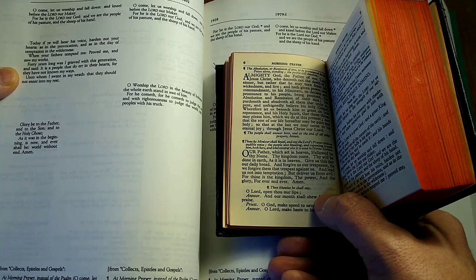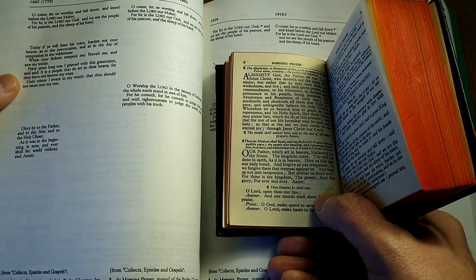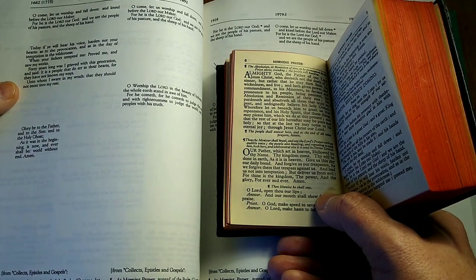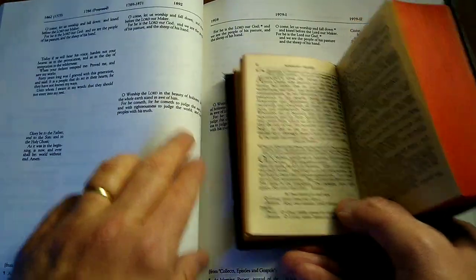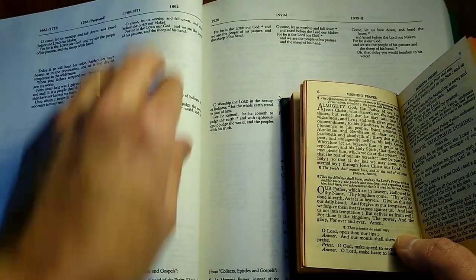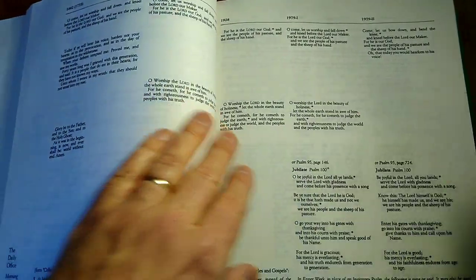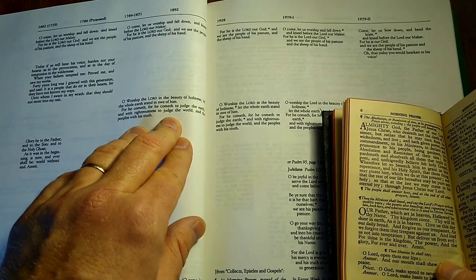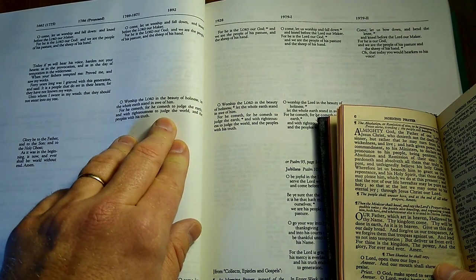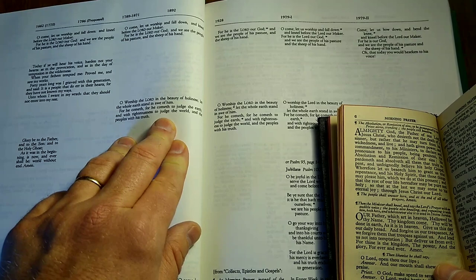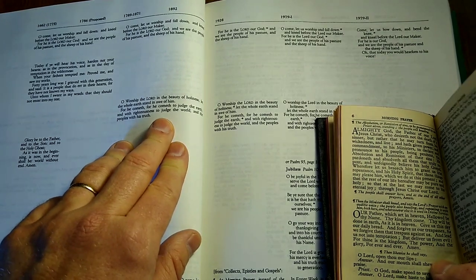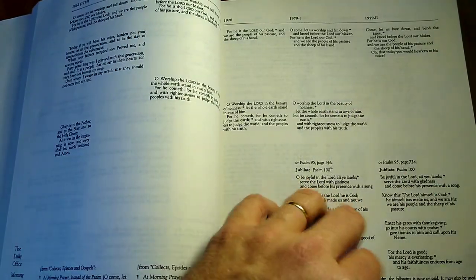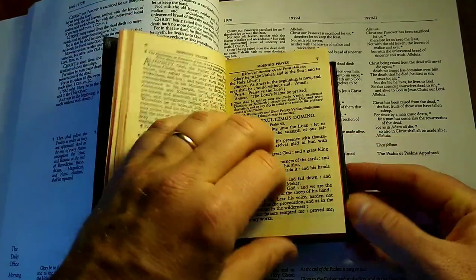'Forty years long was I grieved with this generation and said it is a people that do err in their hearts, for they have not known my ways, unto whom I swear in my wrath that they should not enter into my rest'—too much wrath for early in the morning, apparently. So beginning 1789 in the American prayer book, they swapped out that awful section with 'O worship the Lord in the beauty of holiness, let the whole earth stand in awe of him, for he cometh to judge the earth, and with righteousness to judge the world and the peoples with his truth.'